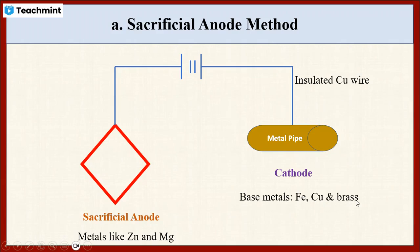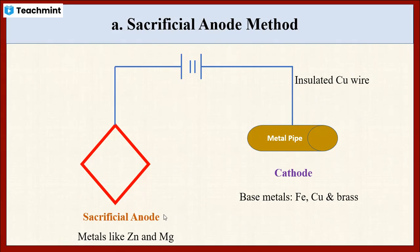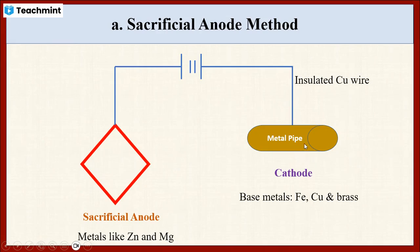Iron, copper, or brass metals are less reactive compared to zinc or magnesium. Less reactive metals have high electrode potential and act as cathodic in nature. When we connect these two types of metals with sealed copper wire, oxidation takes place at the anodic region, meaning the removal of electrons occurs. The zinc or magnesium metals donate electrons to the metal specimen, and at the cathodic region, the metals receive these electrons.